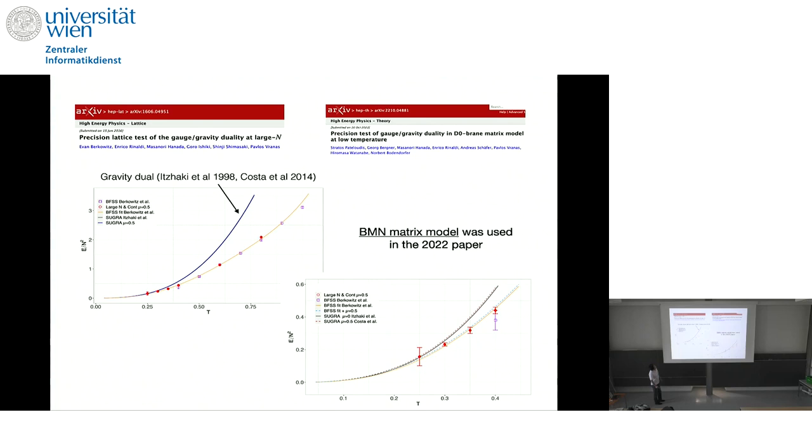And such a correction is estimated by Costa and collaborators from gravity side. Okay, so in 2016, we studied BFSS model. In 2022, for the technical reason I will explain, we used the BMN matrix model instead of BFSS.